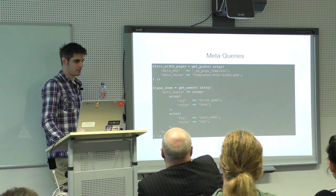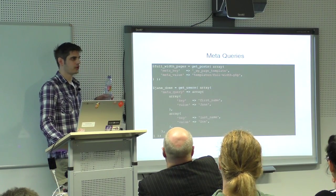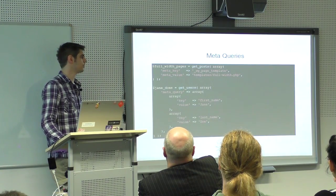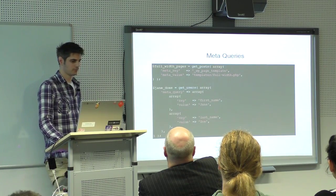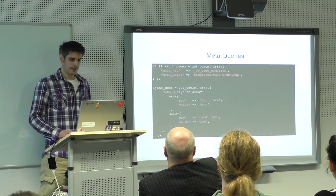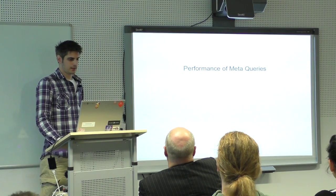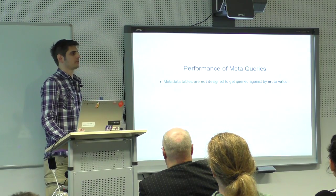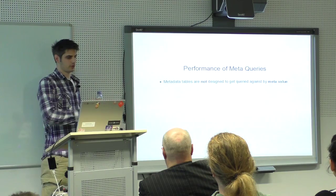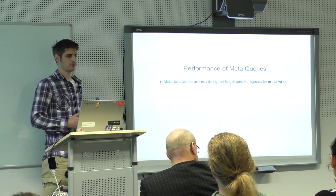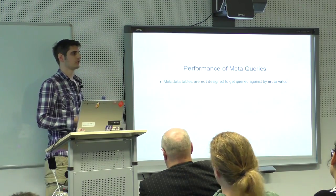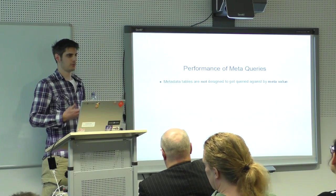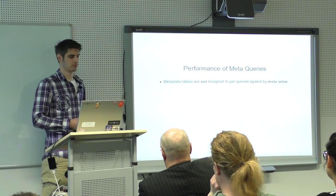For example, I can fetch just the posts that have the full-width page template, or I can fetch every Jane Doe in my company website or dating portal. Let's have a look at the performance of meta queries. All metadata tables — for posts, users, and comments — each have a separate metadata table, because posts, users, and comments each have their own table. That's why there also has to be a separate meta table for each.